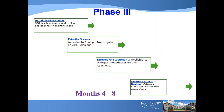Phase three is the initial level review, where your peers review and evaluate the application for scientific merit. They will assign priority scores, and a lot of agencies have adopted the NIH scoring system. From that review process, a summary statement is created and made available to you. Most funding agencies will send you this summary statement.